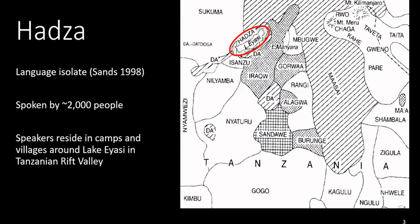Geographically, the Hatsa language is spoken in the area around Lake Eyasi in the Tanzanian Rift Valley. Hatsa is spoken in a region with a rich language ecology, with languages from different language families spoken in the surrounding regions, as shown in this map taken from Kiesling et al. 2008, with the Hatsa-speaking area marked in red around Lake Eyasi. Hatsa itself is a language isolate, meaning it is unrelated to any other known language, and is likely spoken by around 2,000 people in this area.